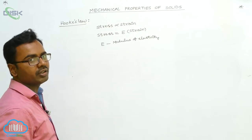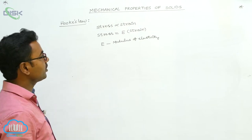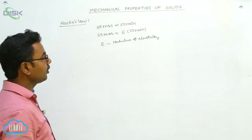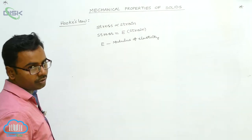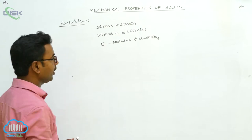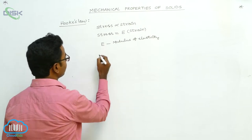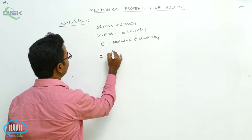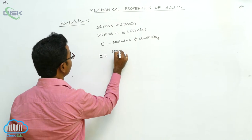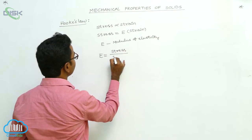The statement of Hooke's law is that stress is directly proportional to strain within the elastic limit, and stress equals E into strain, where E is the modulus of elasticity. So the formula for modulus of elasticity is: E equals stress divided by strain.